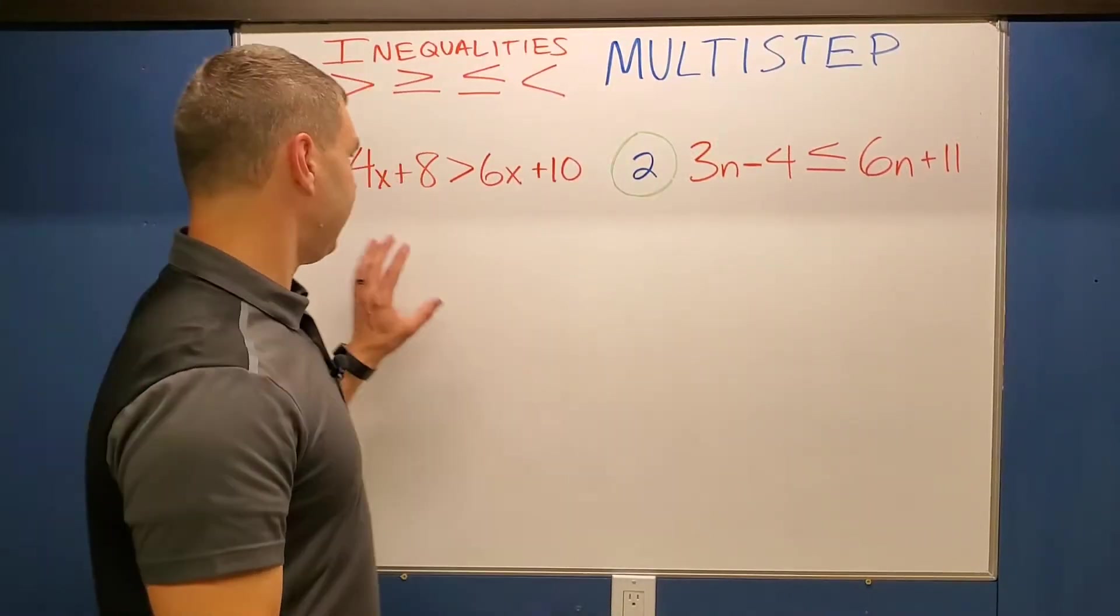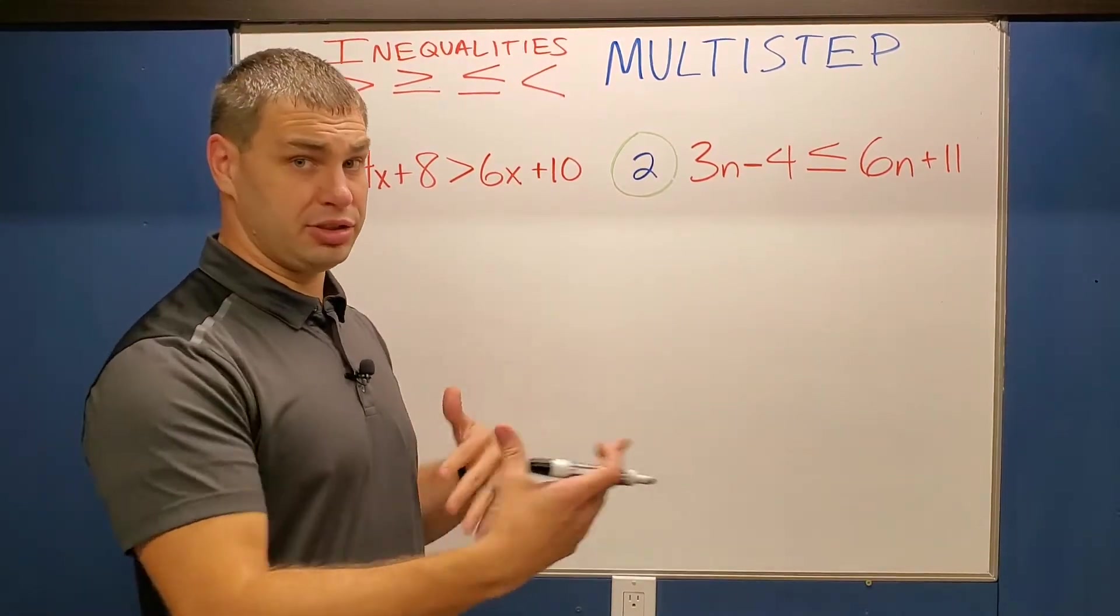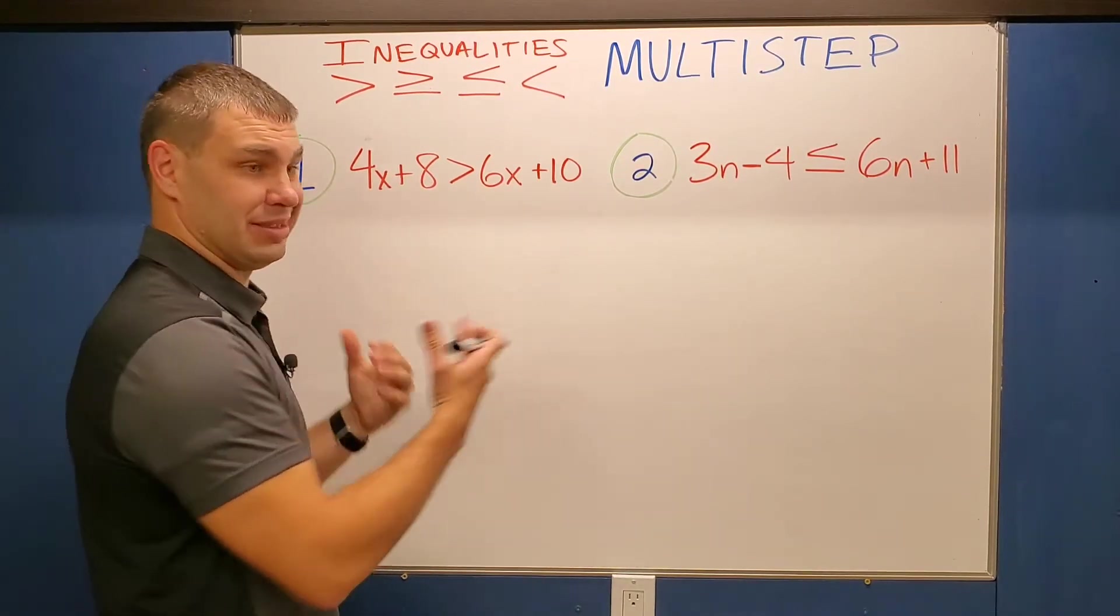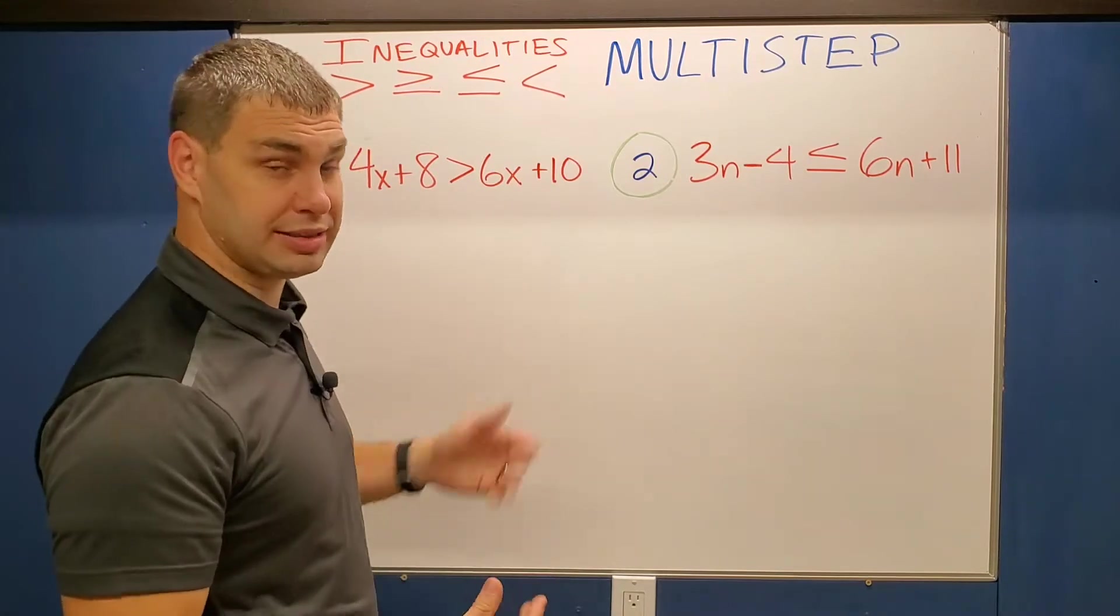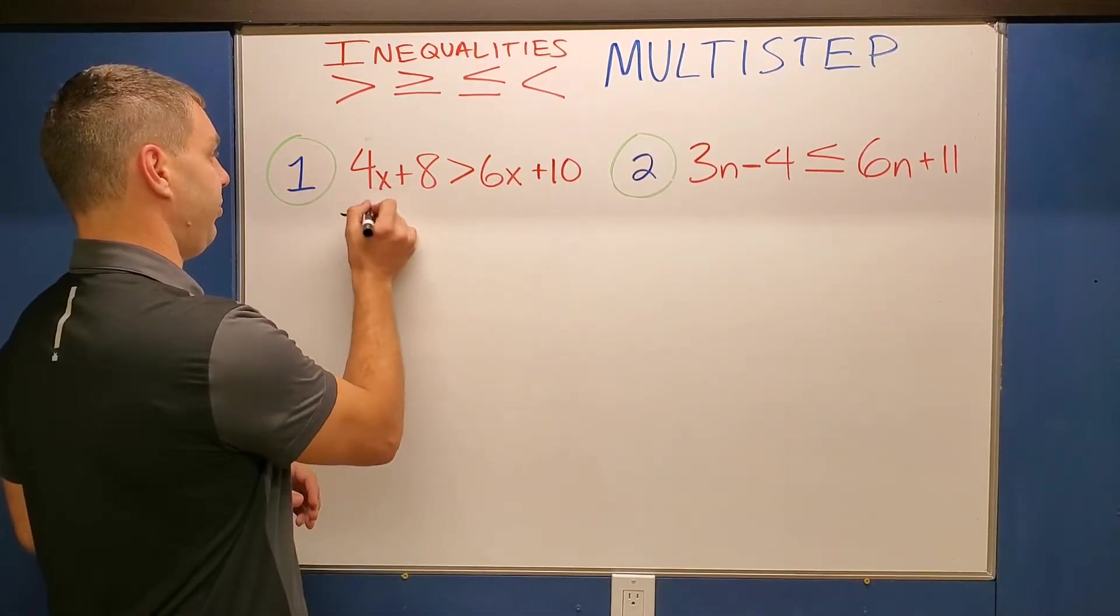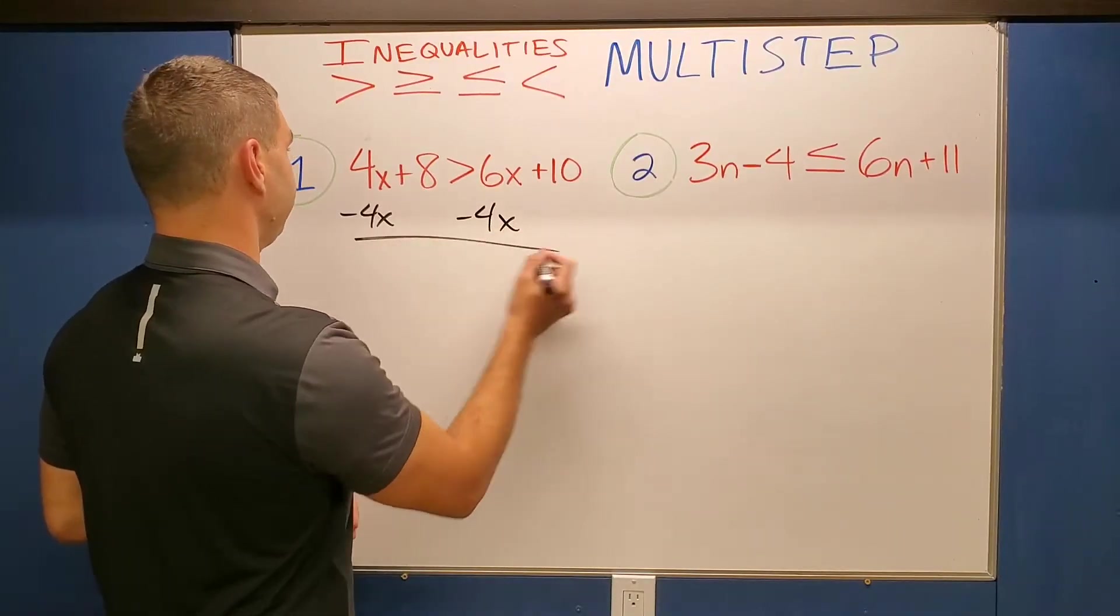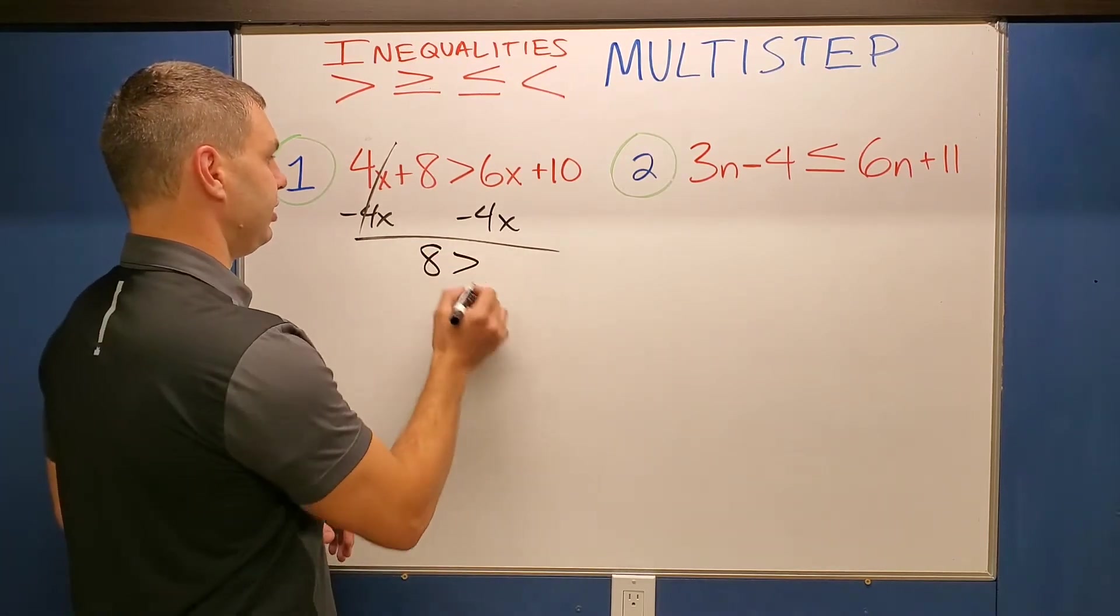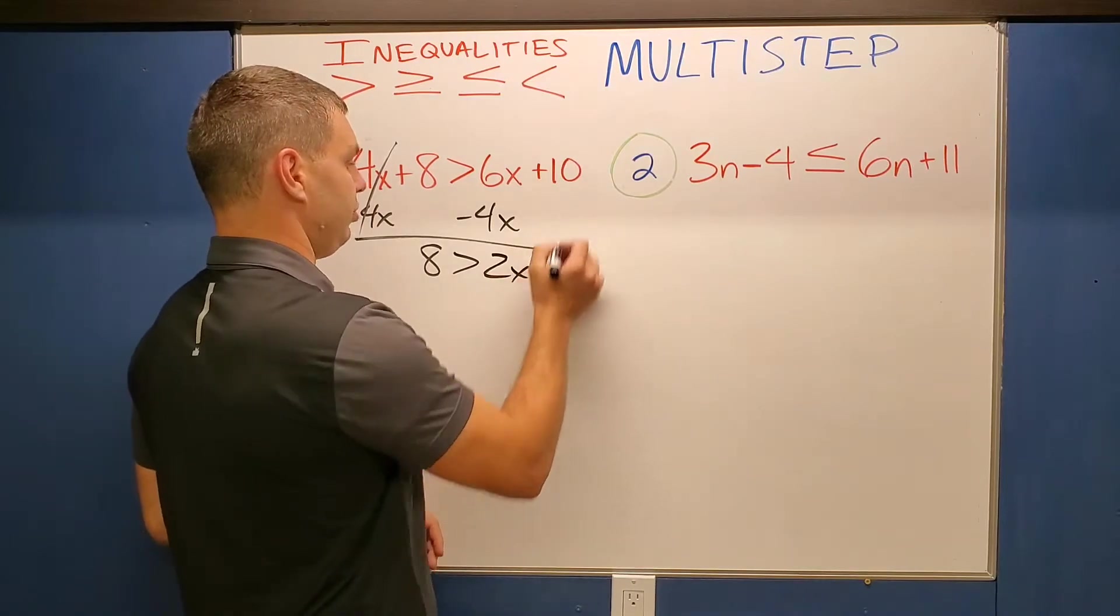Alright guys, number one says 4x plus 8 is greater than 6x plus 10. Now whether we're doing equations or inequalities or whatever, you probably want to get your variable on the same side of the equation. If it's on both sides, I want to move those. The easiest way is to move a smaller one because then you'll still have a positive. I know we like positives, right? No one likes negatives. Alright, cancel those out and then we get 8 is greater than 6x minus 4x is 2x plus 10.